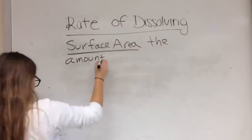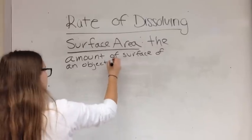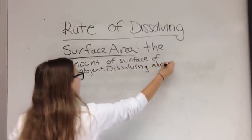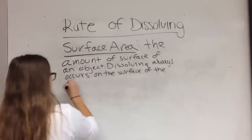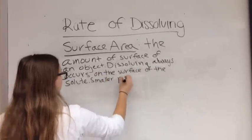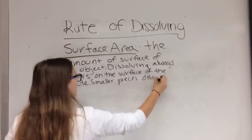The last factor of dissolving is surface area, the amount of surface of an object. Dissolving always occurs on the surface of the solute. Smaller pieces dissolve faster than larger pieces because there is more surface area exposed to the solvent.